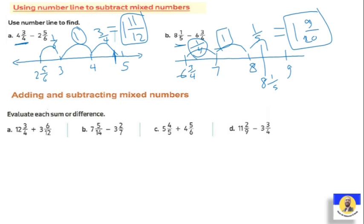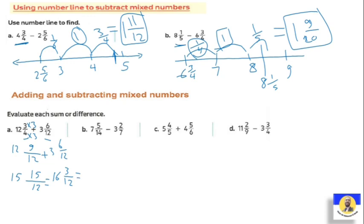Evaluate each sum or difference. If we have twelve and three quarters plus three and six over... to make like denominators, multiply by three up and down, giving twelve and nine over twelve plus three and six over twelve. Adding: twelve plus three is fifteen, and nine plus six is fifteen over twelve. That's one and three over twelve extra, giving sixteen and three over twelve. We can simplify by dividing by three, giving sixteen and one over four.